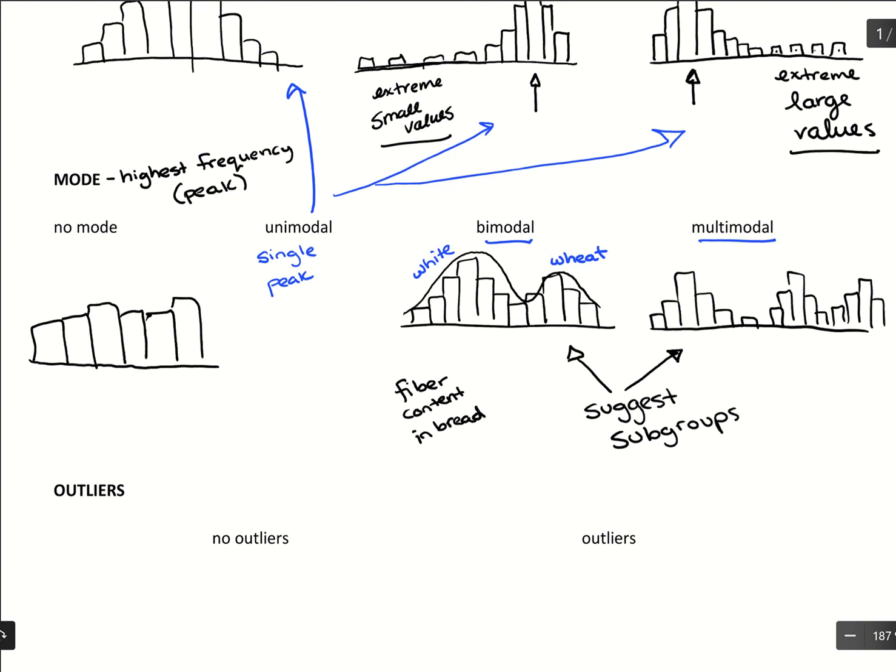But within each one, they'd have their own trends. But the idea is that we have subgroups. So if we were interested in fiber content and bread, it might be more interesting to separate by those subgroups. Just graph wheat bread together and see what are the trends within wheat bread and fiber content.